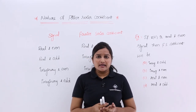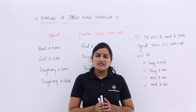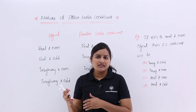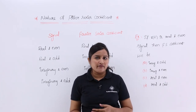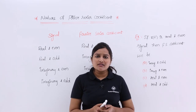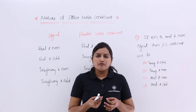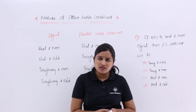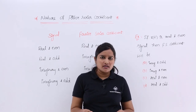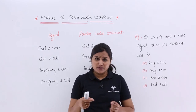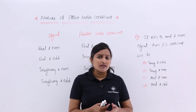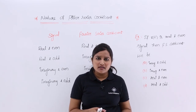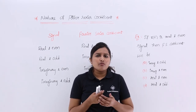In exams they will ask: what is the type or nature of the Fourier series coefficient if your signal is real and even, or if your signal is real and odd. You need to find the Fourier series coefficient nature. Generally you would use equations to calculate the Fourier series and observe whether it is imaginary or real, but that takes more time.